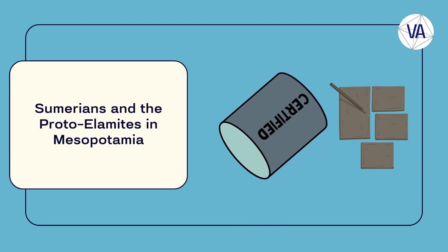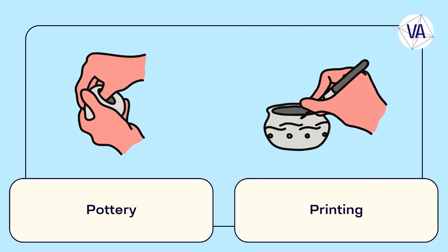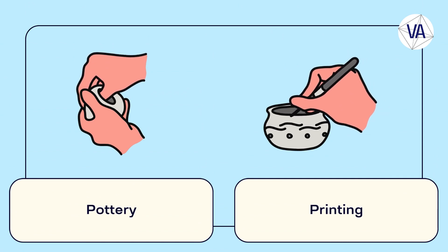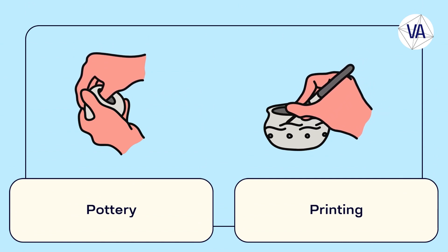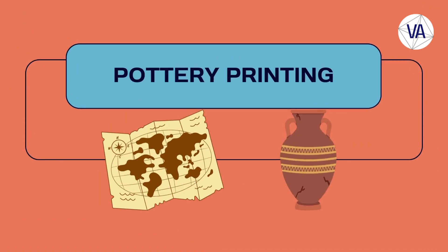Another early form of printing was pottery printing, which involved pressing or stamping designs onto clay pots before firing them. Pottery printing was practiced by various cultures, such as the Minoans, the Egyptians, the Greeks, and the Romans. Pottery printing was also used to create the first maps, such as the Babylonian map of the world, which dates from the 6th century BC.